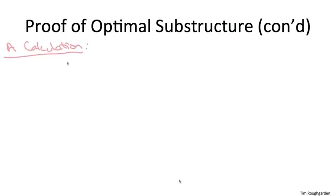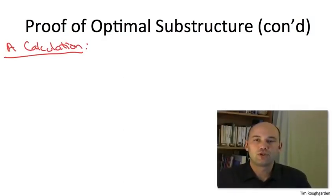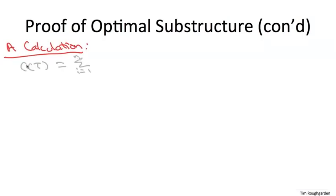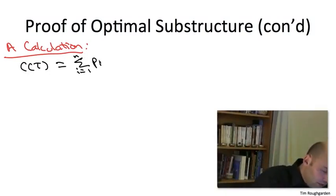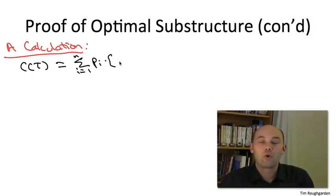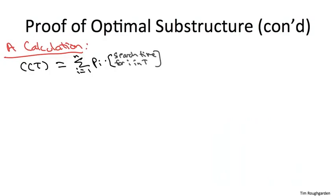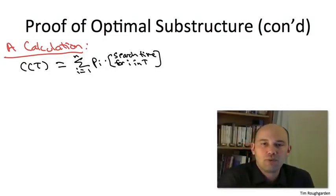Let's begin just by expanding the weighted search time of our original tree, capital T, the purportedly optimal one. You have one sum n for each of the items i, and the weight we give to a given item is just its frequency p_i, and we multiply that by the search time for i in T. So I'm going to pause to tell you the point of this calculation we're about to do. We start with the weighted search time in T, and that's of course expressed in terms of search times in this tree T. What I want to show next is that that can equally well be expressed in terms of search times in the subtrees T1 and T2.